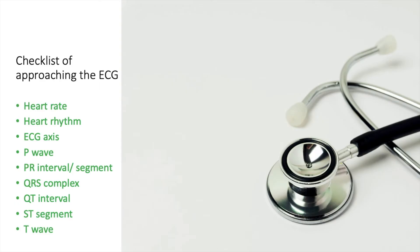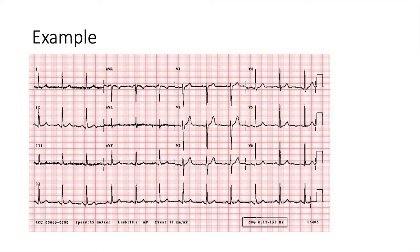That's everything we needed to cover in order to systematically approach an ECG. Let's look at an example bringing everything together. I would start by confirming the patient details, when it was taken, and then look at the calibration — that looks like about 10 squares, so that's completely fine. Looking at the speed of the paper: it's 25 millimeters per second, which is completely normal.